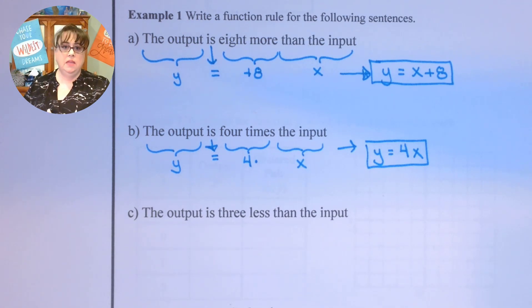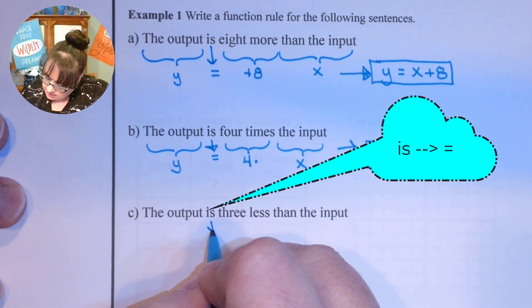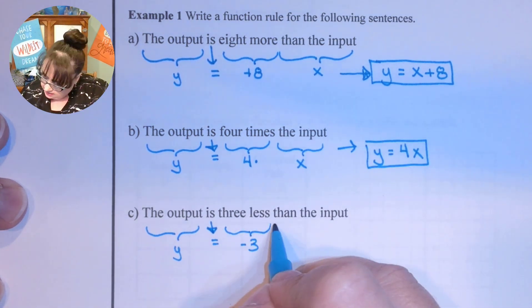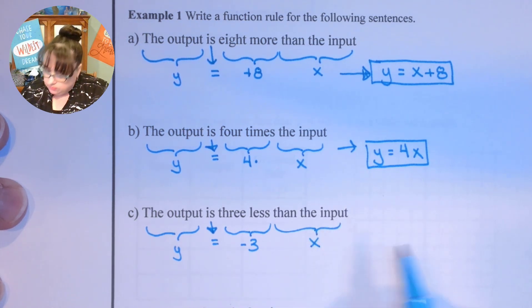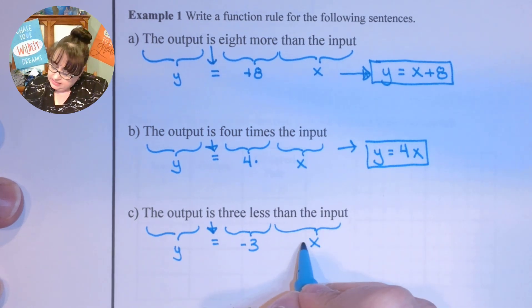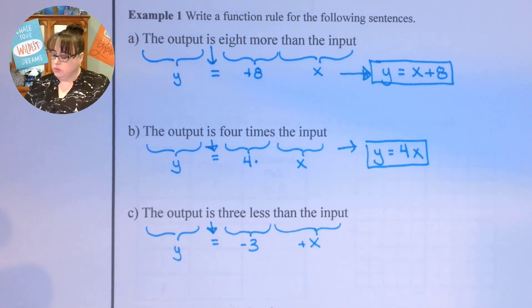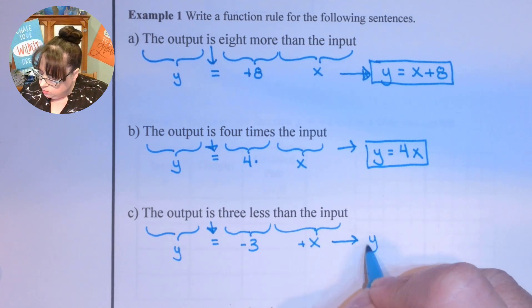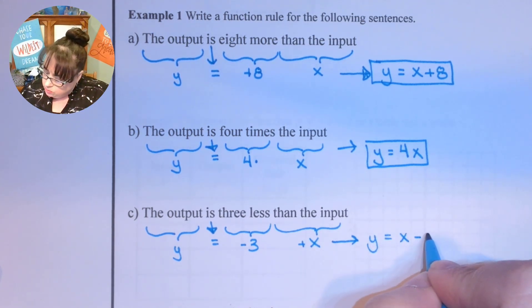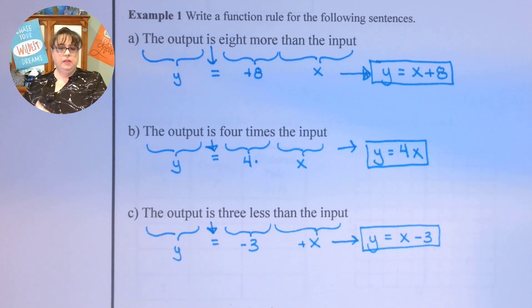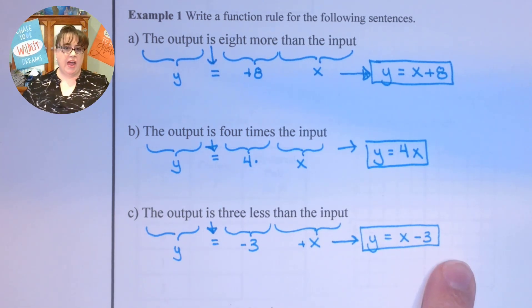The other one we see a lot is 'the output is 3 less than' the input. Again, start with the 'is' — the output is going to be y. '3 less than' means you're going to subtract 3 from the input x. We're not going to write negative 3x; this means positive x minus 3. You should get used to the '3 less than' idea meaning start with your variable and then subtract your number, so y equals x minus 3.